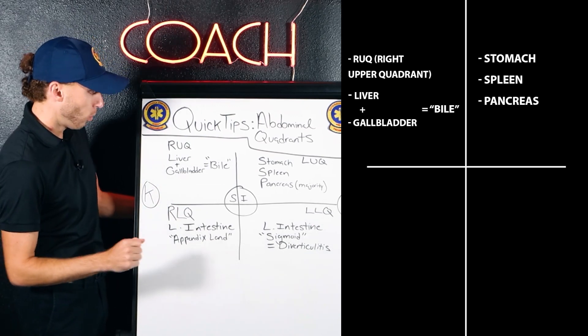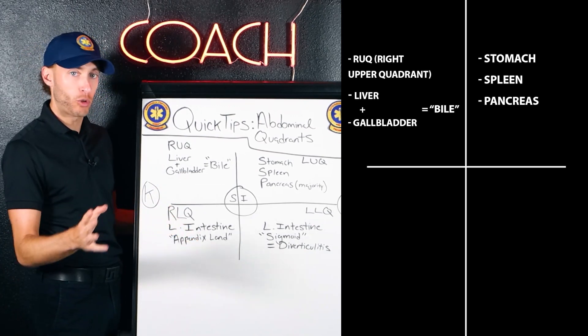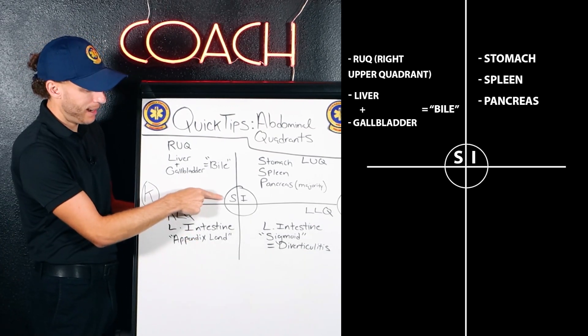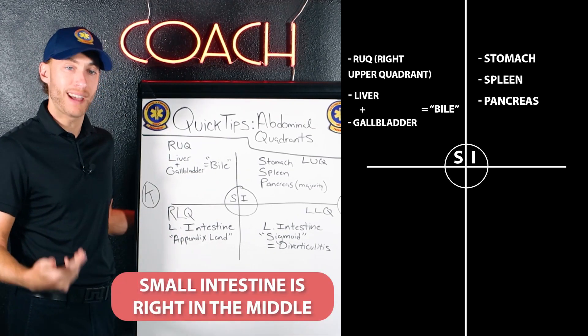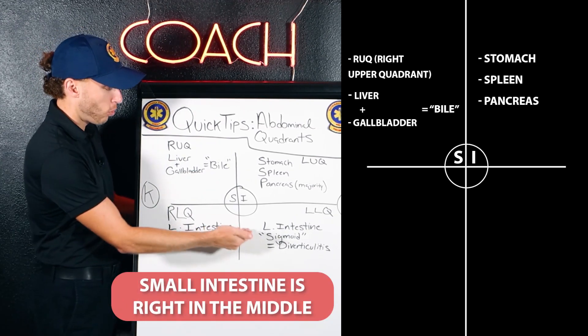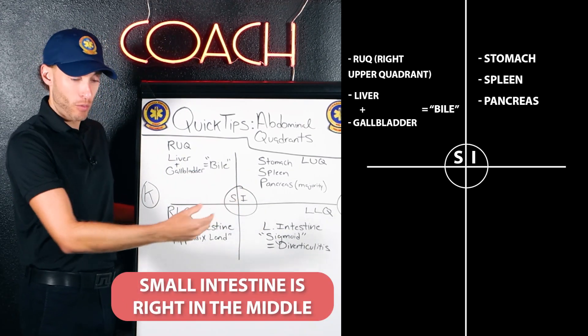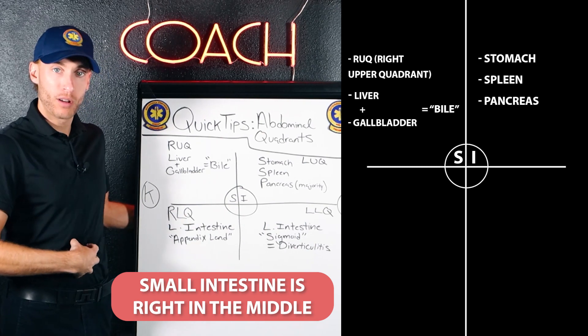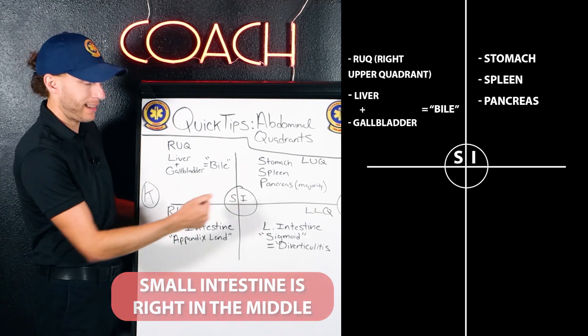Now what we call the in-between is the SI — the small intestine. The small intestine is right in the middle of everything, right in the middle of your gut.